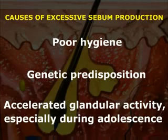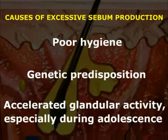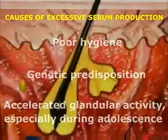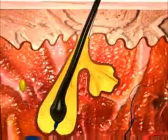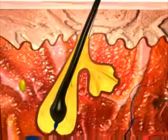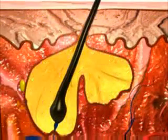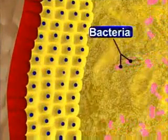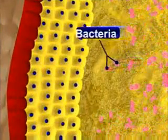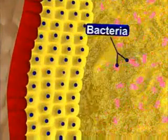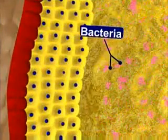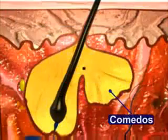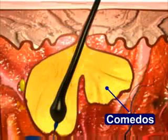During an acne breakout, the pore of the hair follicle is plugged by a mixture of sebum and cells that line the hair follicle. The trapped sebum allows bacteria to grow in the plugged follicles, forming the primary acne lesion called a comedo.